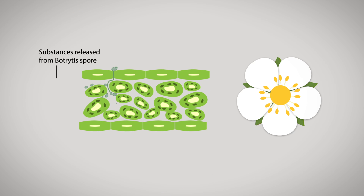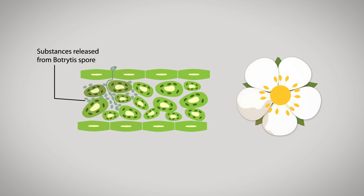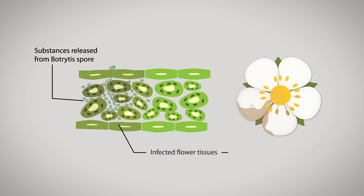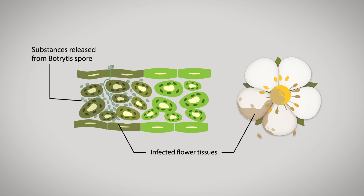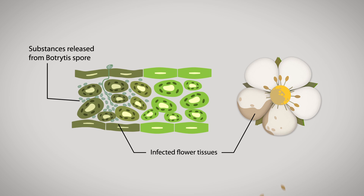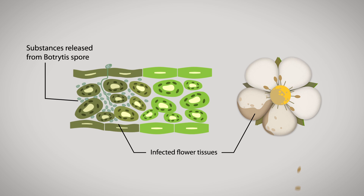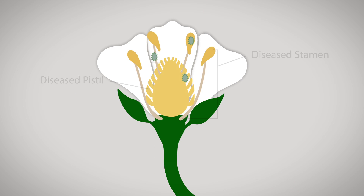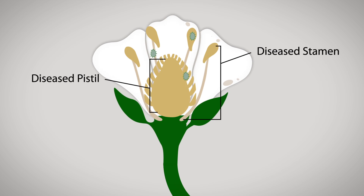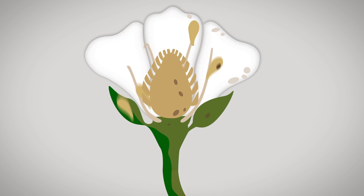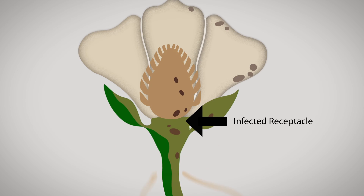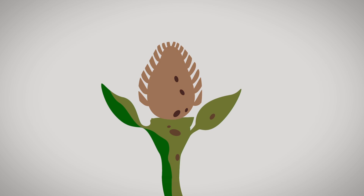As botrytis grows, it releases substances that cause the infected flower tissues to wither and die. Botrytis, present in diseased stamens and pistils, attacks the lower portions of the young fruit and may later destroy the entire berry.